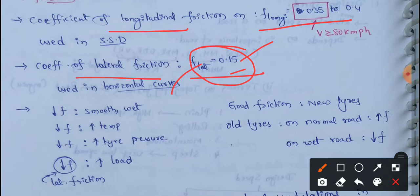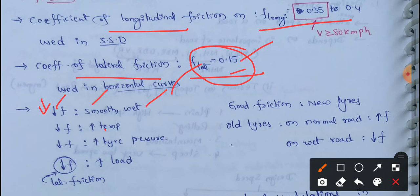When certain conditions occur, the friction value decreases — the coefficient value decreases. When we do not have proper pavement, or the road surface becomes smooth, the friction value will decrease. Also, the friction value is affected by temperature increase, tire pressure increase, and load increase.